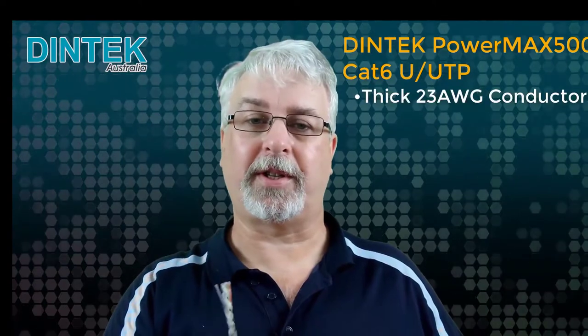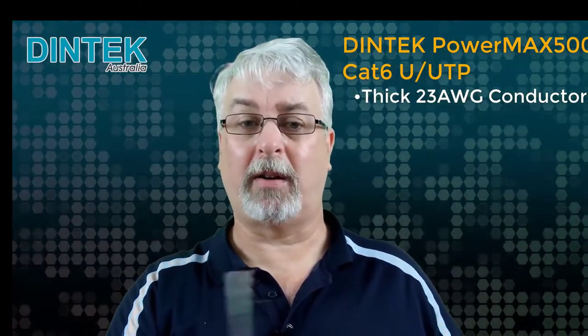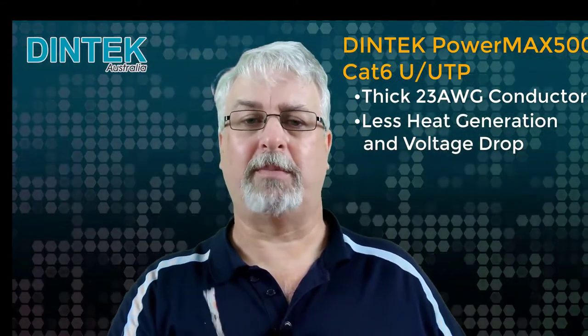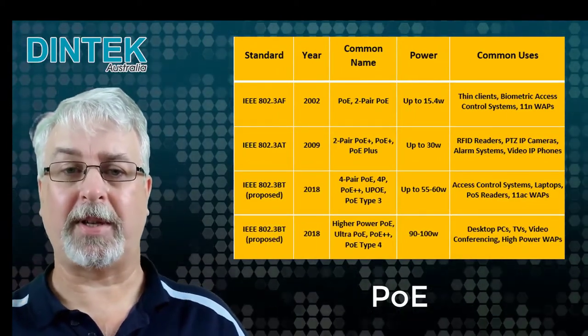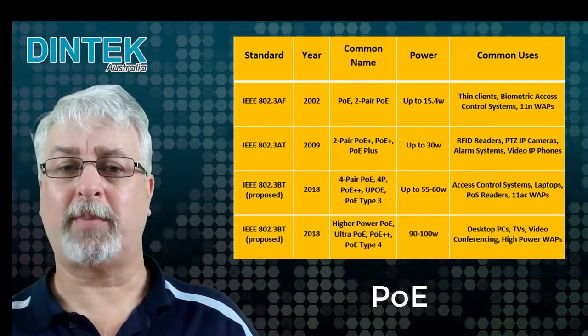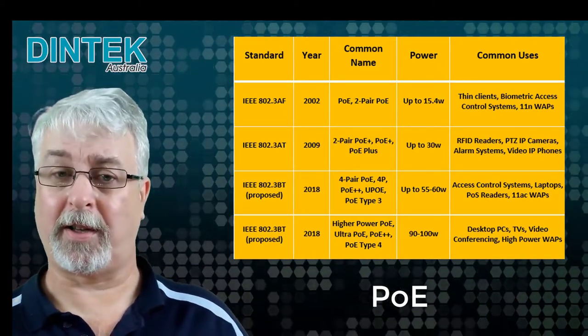So here's a U/UTP unshielded cable example. This is Dintec's PowerMax 500 Cat6 cable, which is constructed using 23 gauge wires, which are thicker than usually found in Cat5e cable and a lot of Cat6 on the market as well. That larger wire gauge means less heat generation and voltage drop over long distances, which results in better and safer performance, particularly when we start getting into PoE or Power Over Ethernet. The latest Type 3 and Type 4 PoE standards are starting to hit the market now, supporting power up to 100 watts — that's enough power for stuff like desktop computers and LED lights.